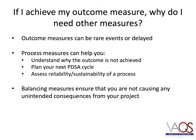You might ask: if I achieve my outcome measure, why would I need a process and balancing measure? Outcome measures can be delayed — for example, if you wanted to collect data on 30-day readmissions, you have to wait at least 30 days or longer. Process measures help you understand why the outcome is not achieved, help you plan the next PDSA cycle, and help you assess the reliability and sustainability of a process. Balancing measures ensure that you aren't causing any unintended consequences from the improvement project.